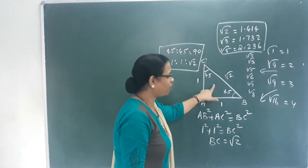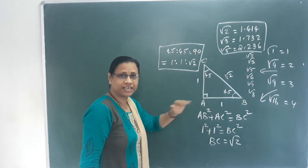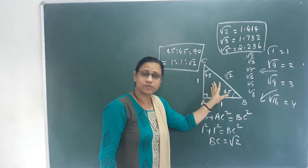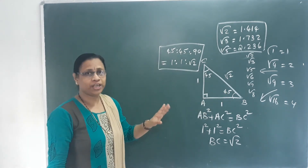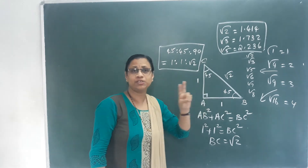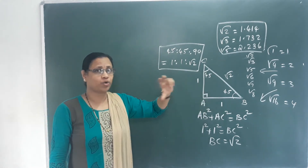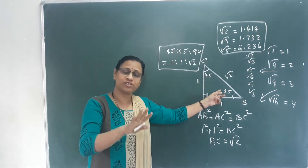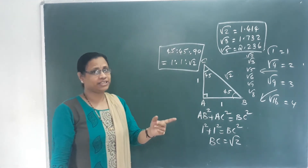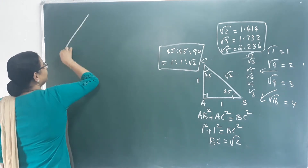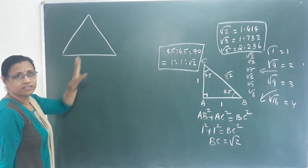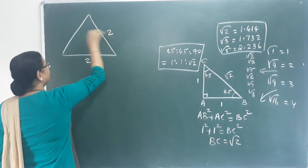This is the triangle ratio. One side is 2, because we chose a triangle ratio based on this.